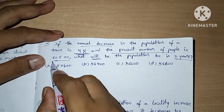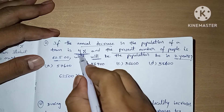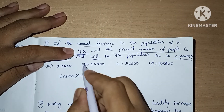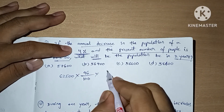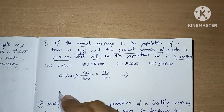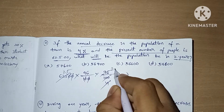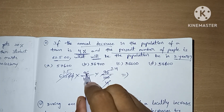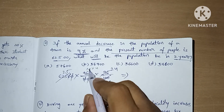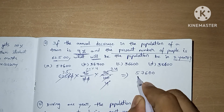At present the population is 62,500. Every year it is decreasing by 4 percent, so 100 percent becomes 96 percent. In the second year also, 100 becomes 96. Double zeros cancel, 25 × 25 = 625 and 24 × 24 = 576. So 576 × 100 = 57,600. 57,600 is our answer — option A.